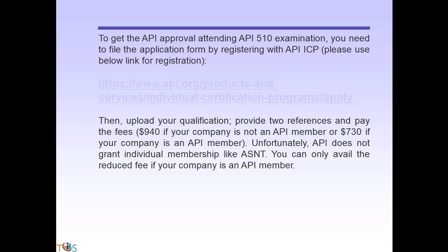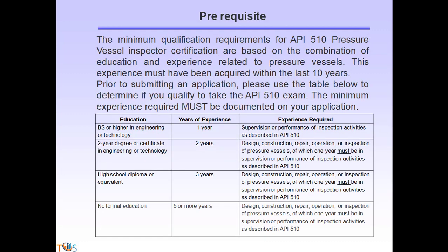The exam fee is $940 if your company is not an API member, or $730 if your company is an API member. Unfortunately, API does not grant individual membership like ASNT, so you can only avail the reduced fee if your company is an API member — there is no individual certification by API membership.